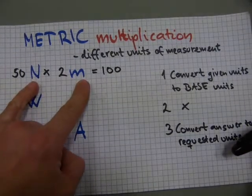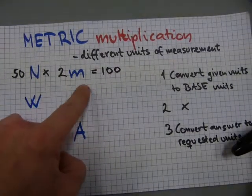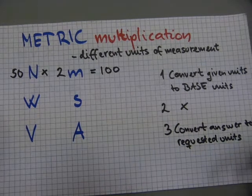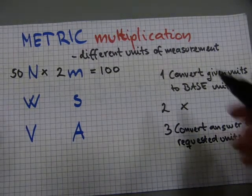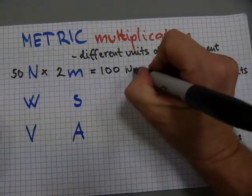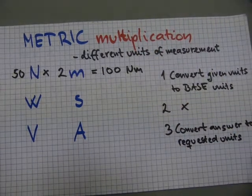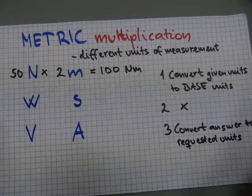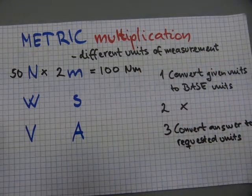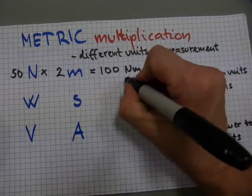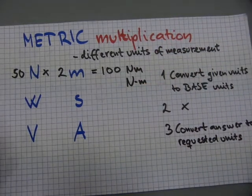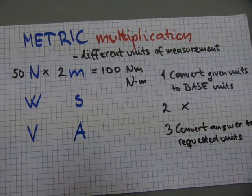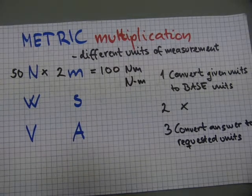Now what do we do with the units of measurements? We have newtons, we have meters, and sometimes these different units of measurements combine to make a third new type of measurement. In this case, it is going to be called newton meters, sometimes printed as capital N, lowercase m, sometimes there is a dash in between. It has the same meaning, 100 newton meters of torque.